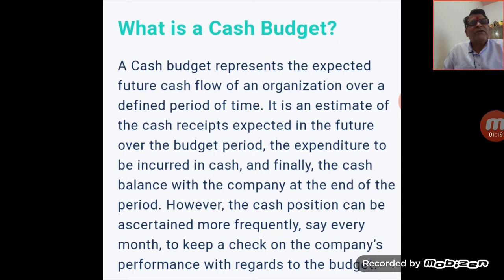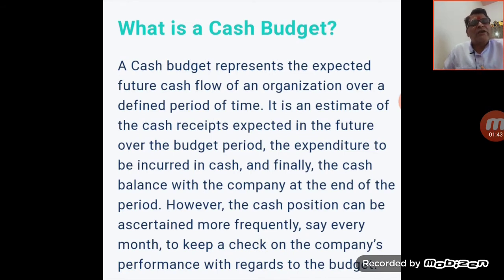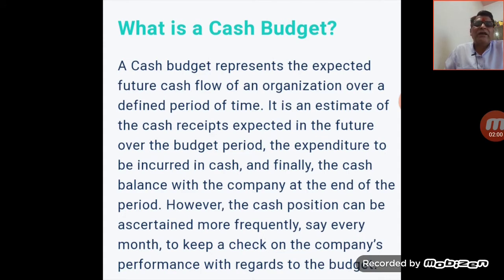First, what is a cash budget? A cash budget represents the expected future cash flow of an organization over a defined period of time. It is an estimate of the cash received expected in the future over the budget period, the expenditure to be incurred in cash, and finally the cash balance with the company at the end of the period.